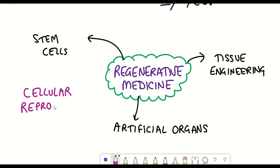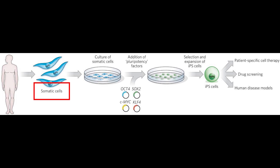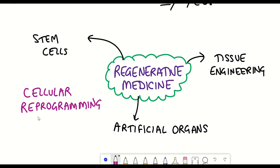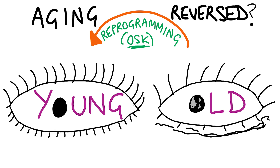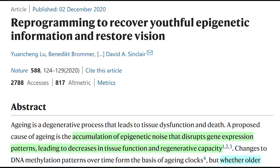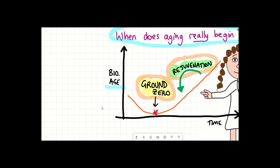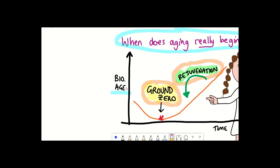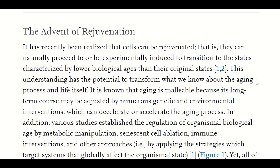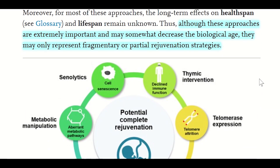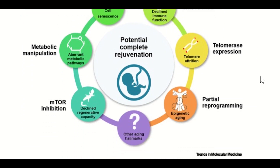Another term you may come across is cellular reprogramming — the idea that you can reprogram a differentiated somatic cell back into a pluripotent stem cell-like state. A lot of research is being conducted into using cellular reprogramming in different therapies. I mentioned work from the David Sinclair lab, whereby they showed that cellular reprogramming could restore vision in aged mice. In this manner, the ageing process is effectively reversed because the biological age of those cells gets reduced.